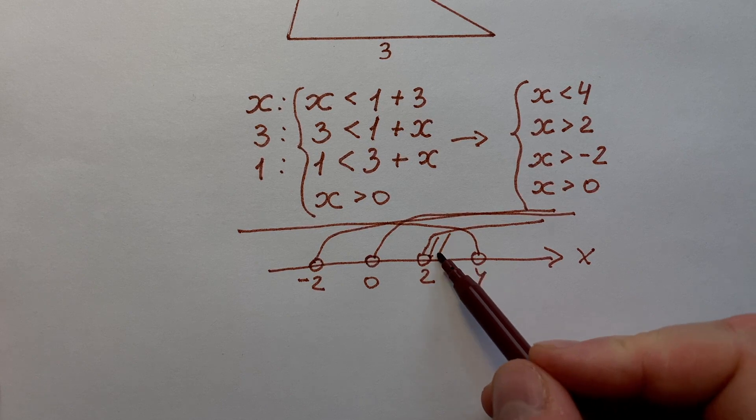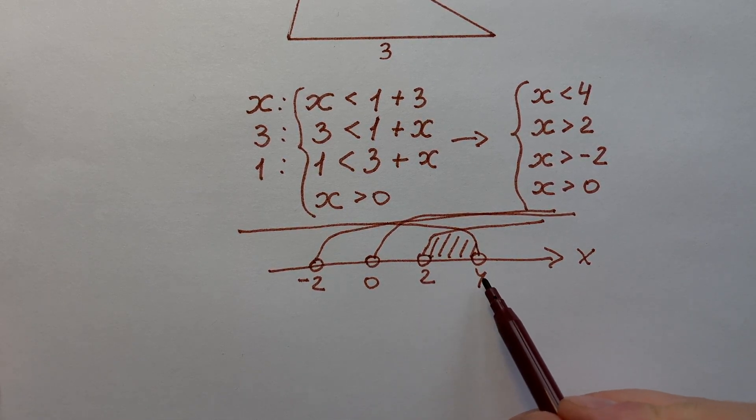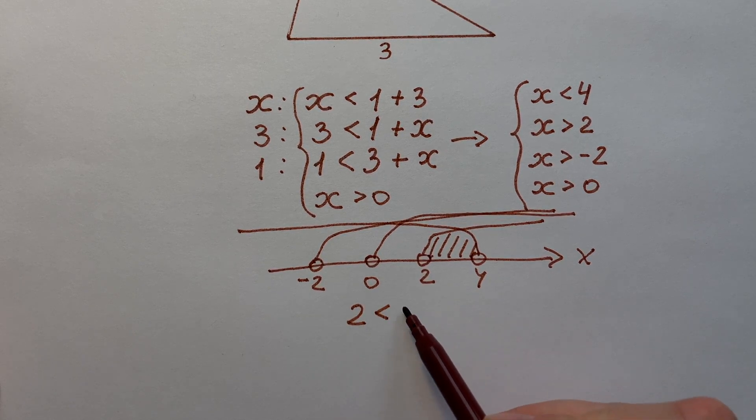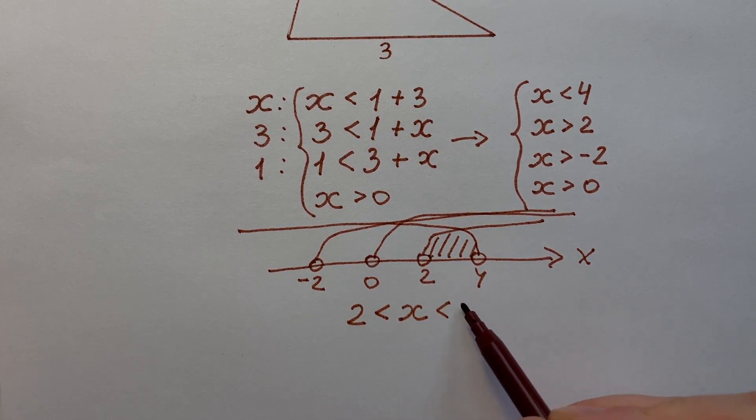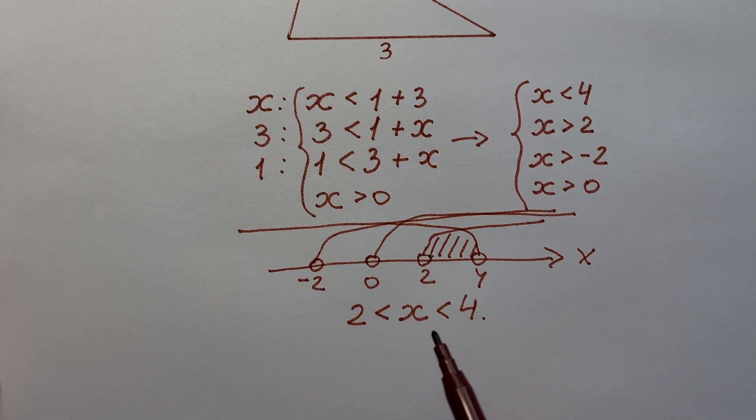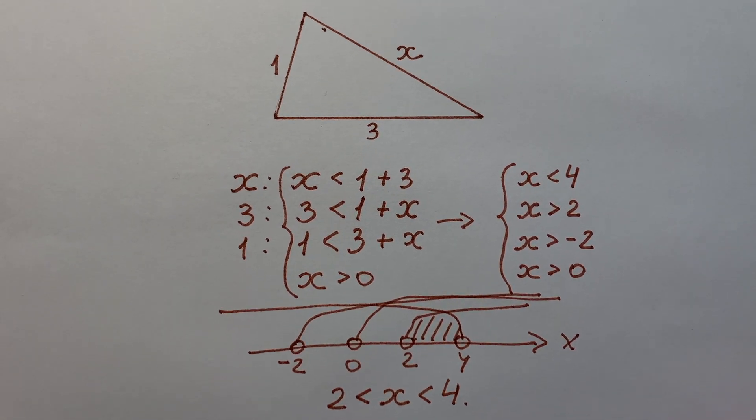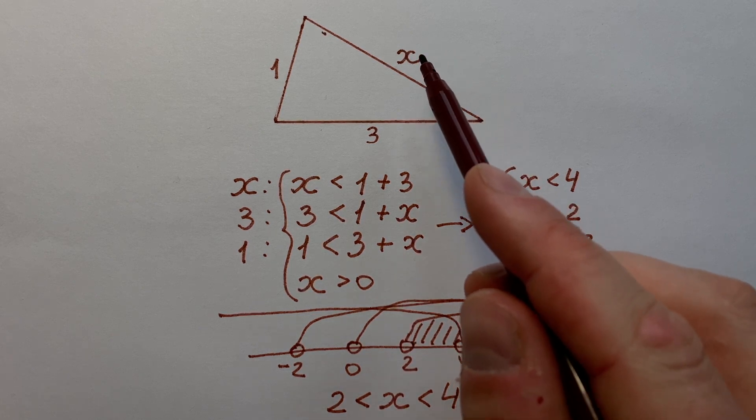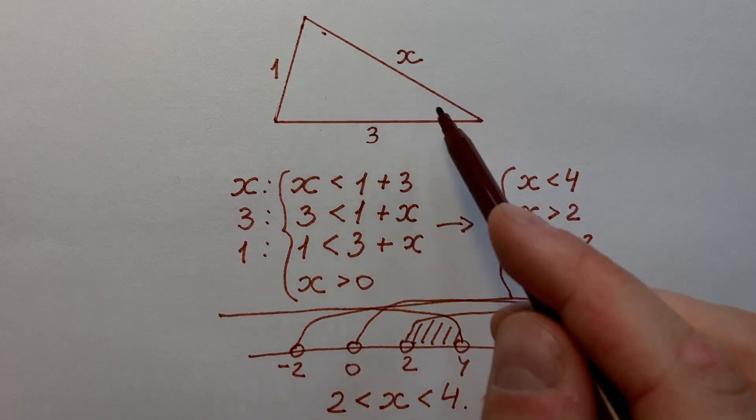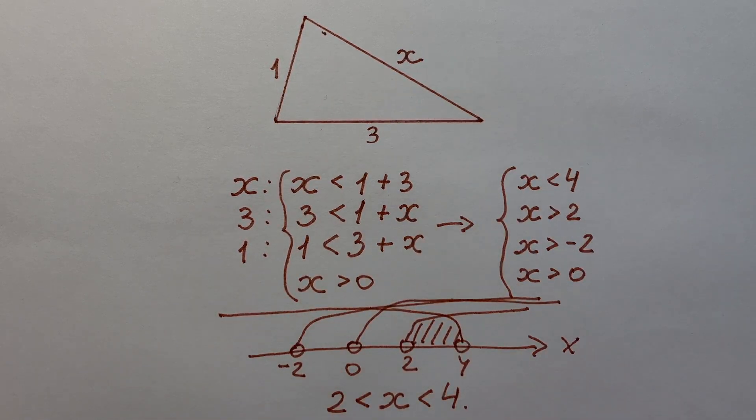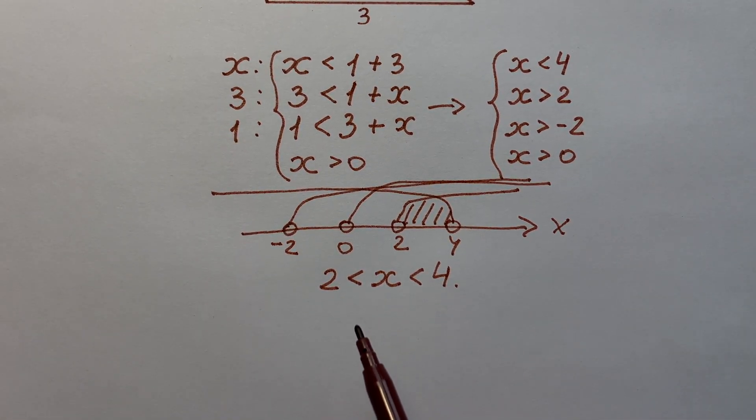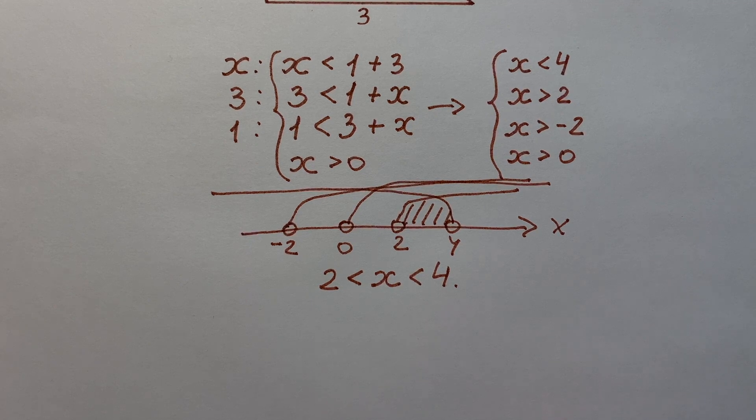So right now we see that common solution of our four inequalities is interval between 2 and 4, or we can write that x lies between 2 and 4. Now let's remember that at the beginning of this problem we have to find whole number x. This is a triangle with all whole numbers, so knowing that length is a whole number we can finally write an answer and x equals to 3.